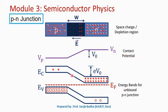Now let us see how the energy band diagram for this P-N junction is drawn. First we draw the Fermi energy level, which is constant across the device. On the N side the Fermi level is shown close to the conduction band, and on the P side the Fermi level is close to the valence band.